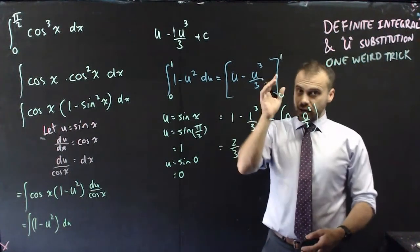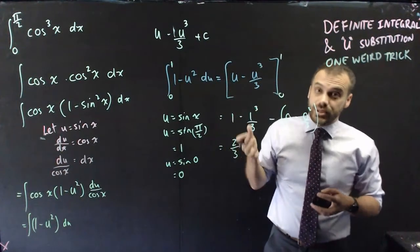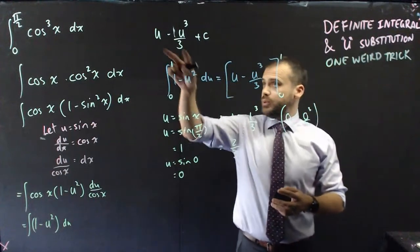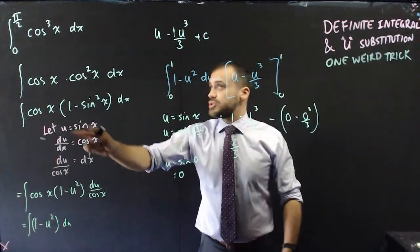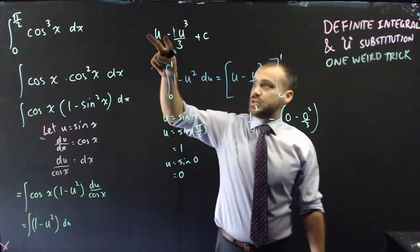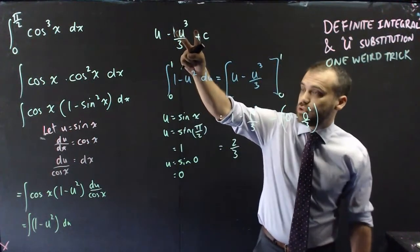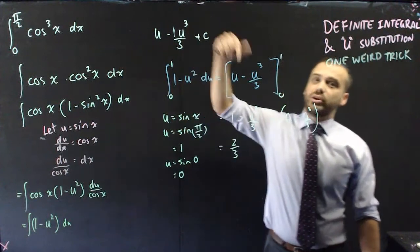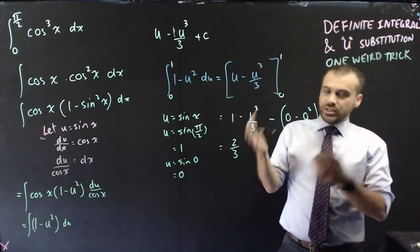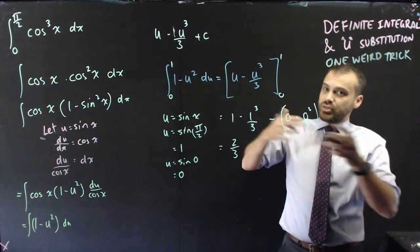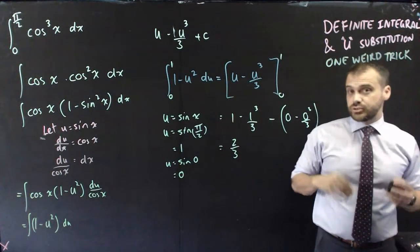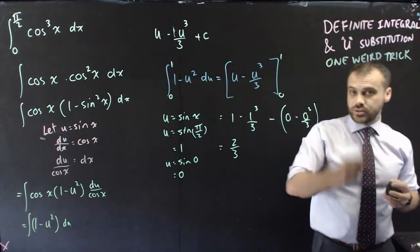This is great, and this is really where the key to it is, because if we didn't have this one weird trick, when we get to this stage, we'd have to put sine x into here, and we'd have to put sine x into here, and we'd have sine x minus sine cubed x, and then we'd have to put pi on 2 into sine cubed x and cube sine pi on 2. We'd still end up at the same result, but the thing gets way messier. That's it. That's our definite integral u substitution and one weird trick.